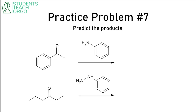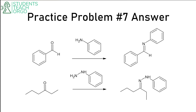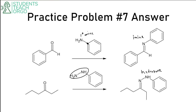Predict the products once more. The first reactant has an amine attached to a phenyl group — even though it's attached to a phenyl group, it's still considered a primary amine because only one carbon is attached to nitrogen. So we form an imine. The second reactant uses hydrazine, so we form a hydrazone. The hydrazine group goes along for the ride; you form the C=N functional group here, and the rest is attached.